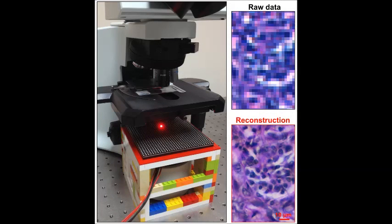A new microscope has been developed by Caltech, and this is a brilliant pixel imaging system that has a significant performance improvement compared to a standard microscope. The raw image taken with a two-times objective lens, shown above along with the reconstructed image, was produced with this new microscope.